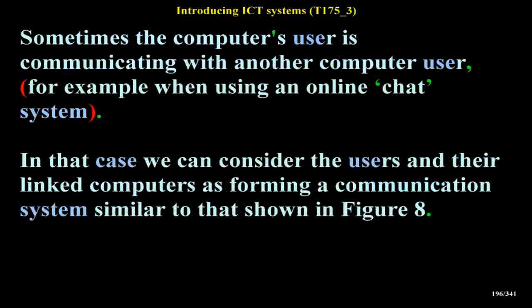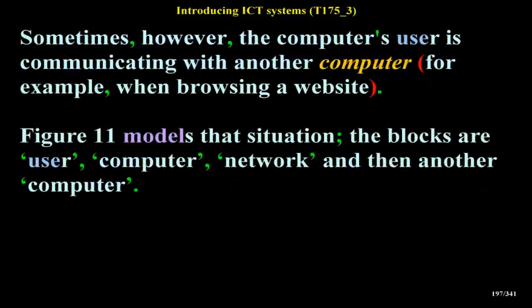Sometimes the computer's user is communicating with another computer user, for example when using an online chat system. In that case we can consider the users and their linked computers as forming a communication system similar to that shown in Figure 8. Sometimes, however, the computer's user is communicating with another computer — for example when browsing a website. Figure 11 models that situation.